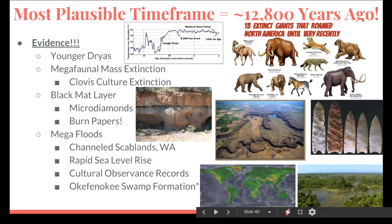We shared this planet with mammoths, mastodons, saber-toothed cats, and the list goes on and on. About 75% of megafauna went extinct around 12,800 years ago. The discovery of a black mat layer with micro-diamonds and platinum is super important. We've also got the Comet Research Group that just came out with their burn papers that talk about global fires 12,800 years ago.